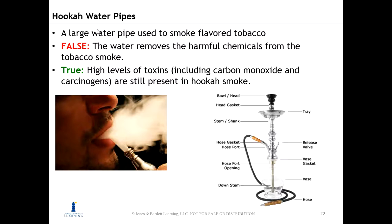The vase is filled with water, and the down stem is submerged. The bowl is covered with a perforated foil sheet or metal screen, and hot charcoal is placed on the bowl head, causing the tobacco to heat up and smoke. Sucking through the hose draws more heat on the tobacco, accelerating the heat transfer. The smoke is drawn down through the stem and under the water, then rises up above the water, into the vase, and into the hose port, which leads to the smoker's mouth.